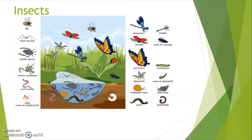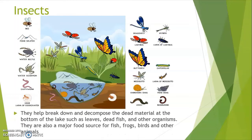Insects: as you can see in the picture, these are the insects that live in a pond. They help break down and decompose dead material at the bottom of the lake, such as leaves, dead fish, and other organisms. They are also a major food source for fish, frogs, birds, and other animals.